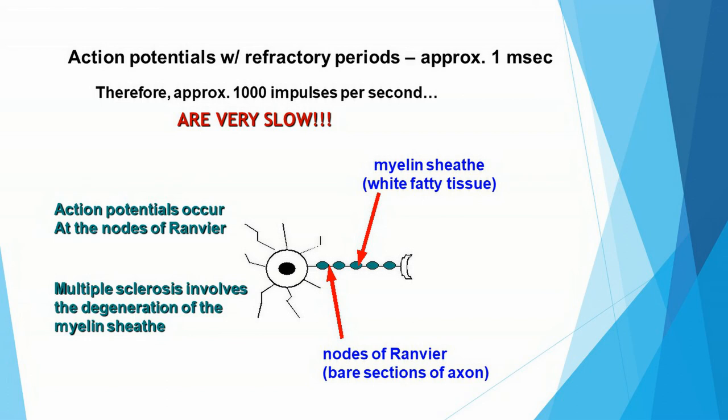One final point: a child's myelin sheath is not fully developed at birth, and the myelin sheath continues to develop after birth. This is believed to affect the length of time it takes for a child to learn to walk.